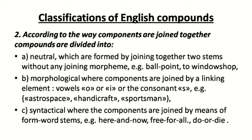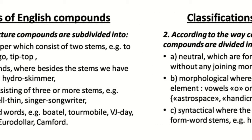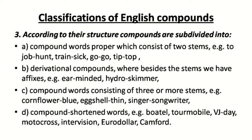Classification according to the way components are joined together divides compounds into neutral, morphological, and syntactical. Neutral compounds are formed by joining two stems without any joining morpheme, like 'ballpoint' or 'window shop'. Morphological compounds have components joined by a linking element — vowels 'o' or 'i', or consonant 's' — for example, 'handicraft', 'sportsman'. Syntactical compounds have components joined by form-word stems. According to structure, compounds are subdivided into: compound words proper (two stems), derivational compounds (stems plus affixes), compounds of three or more stems, and compound shortened words.